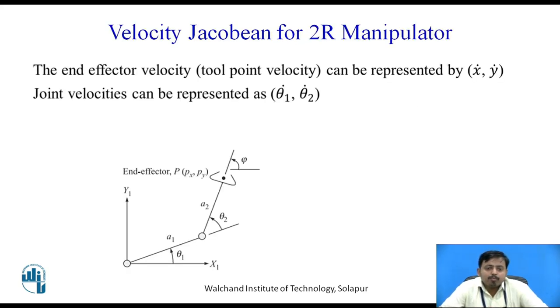In the velocity Jacobian of a 2R manipulator, we are going to find out how the end effector velocity and joint velocities can be related with the Jacobian matrix.